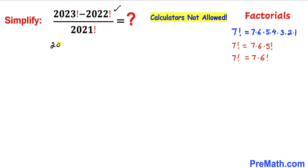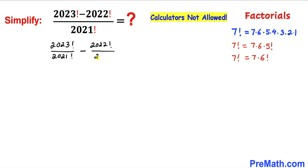We can write this as 2023 factorial divided by 2021 factorial, and then minus 2022 factorial divided by 2021 factorial. Let's go ahead and simplify.